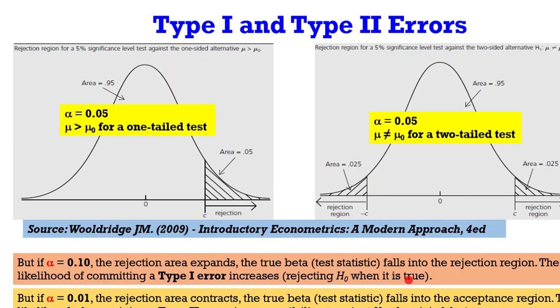Now let's take a look at this plot. To your left is a one-tail test using alpha at 5%, and to your right is a two-tail test fixing alpha at 0.05. Here is the rejection region for the one-tail test — if after performing your analysis the test statistic falls in this region, then you are going to reject the null hypothesis. For a two-tail test, which is the output from most econometric packages, if your result falls in the rejection regions, then you are rejecting the null hypothesis. These plots are from Woodridge's textbook and are based on a 5% significance level.